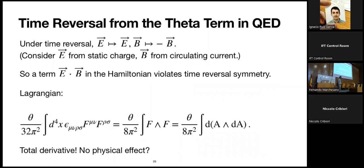I want to talk about some other time-reversal-violating effects which come from theta terms, and this will segue into the last part of my talk where I circle back to quantum gravity. Under time reversal, magnetic fields change sign but electric fields don't, so an E-dot-B term in the Hamiltonian violates time reversal symmetry. We can add such a term in QED — it looks like a parameter theta coupled to this antisymmetric contraction of two field strengths, which we call F-wedge-F. This term can be written naively as a total derivative, so you might think it has no physical effect.